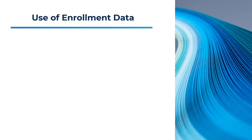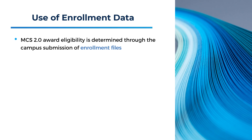Award consideration for the Middle Class Scholarship begins with the submission of enrollment files from campuses. Submitting student enrollment files allows CSAC to consider MCS 2.0 eligibility for students attending a UC, CSU, or community college. CSAC uses this enrollment data to determine both a student's eligibility and MCS award amount.